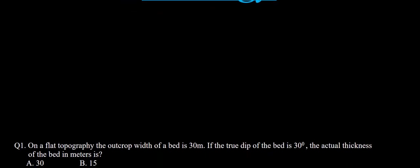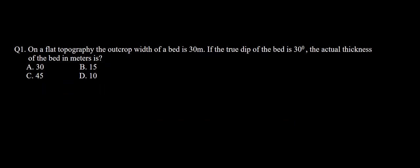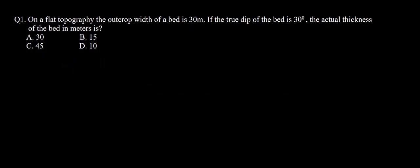Our first question says: on a flat topography, the outcrop width of a bed is 30 meters. We have been given the outcrop width. The true dip of the bed is 30 degrees. We need to find the actual thickness of the bed in meters.